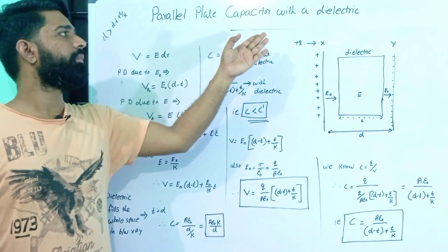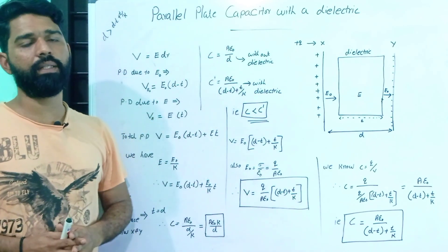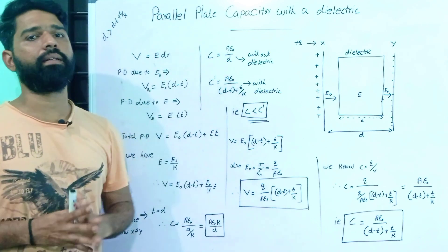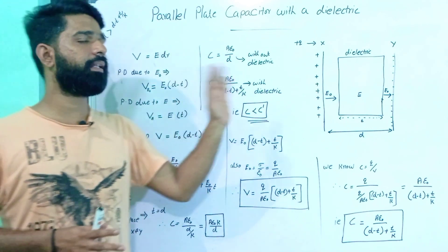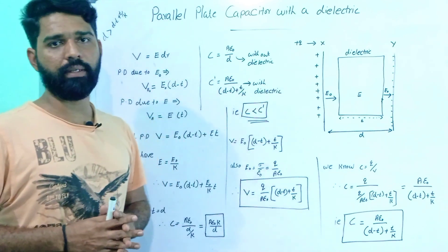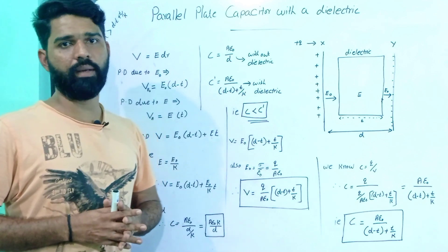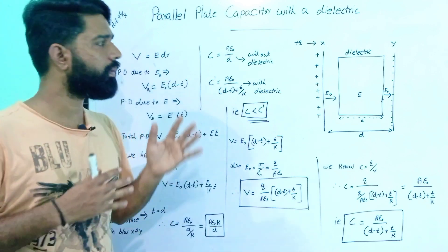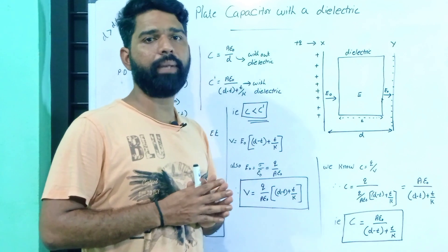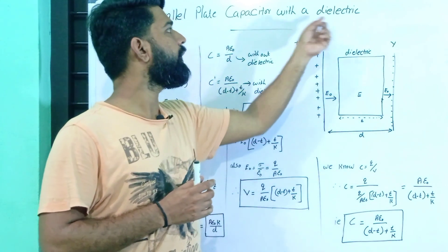Parallel plate capacitor with a dielectric. In the third class, we learned about the parallel plate capacitor. Previously, we considered the normal atmosphere. In this case, we consider the dielectrics. We consider the two plates X and Y, and we place the dielectric between them.